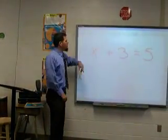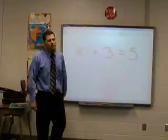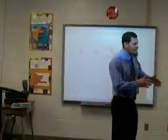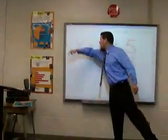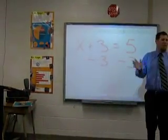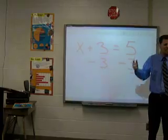A simple example: x plus 3 equals 5. The goal is to get the x by itself on one side. To get rid of the plus 3, you gotta subtract 3. But you gotta do both sides or else it's just whack G.